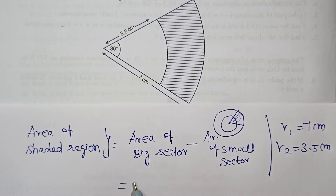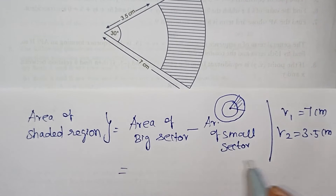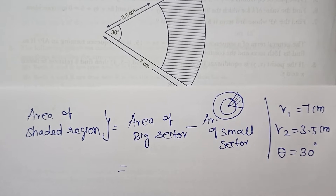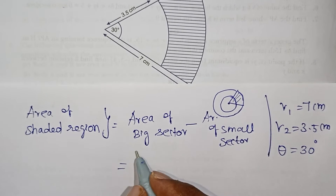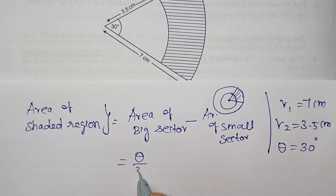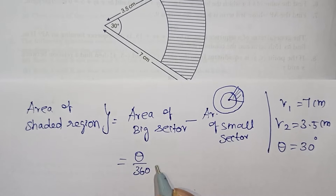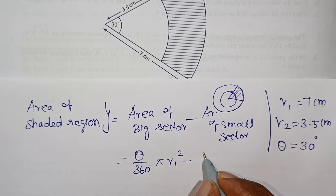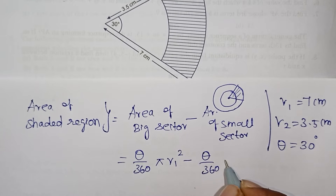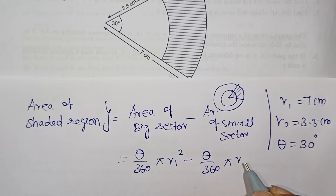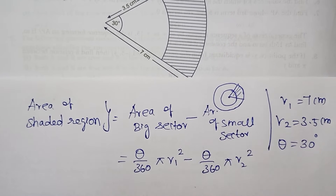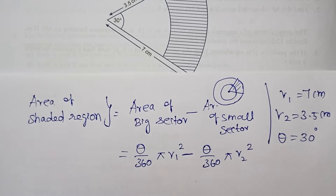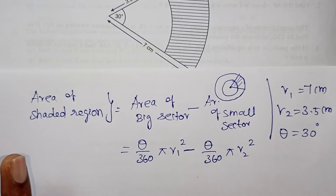The angle theta is 30 degrees. Both sectors will use the same theta. Now we apply the formula. The big sector area is theta by 360 into pi R1 squared. The small sector area is theta by 360 into pi R2 squared. Now we combine these terms.